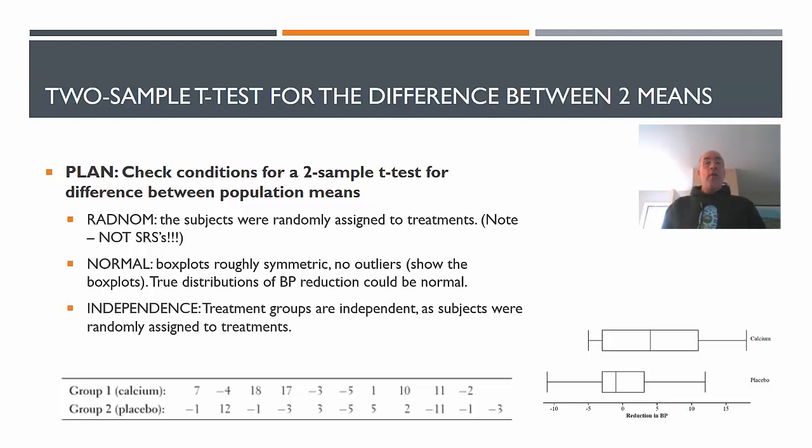Independence here - the treatment groups are independent. We have this group here, this group here. They do not interact with each other. They don't influence each other's results. And also within those groups, the men don't influence each other at all. The two treatment groups are independent. And we did that because the subjects were randomly assigned to treatments.